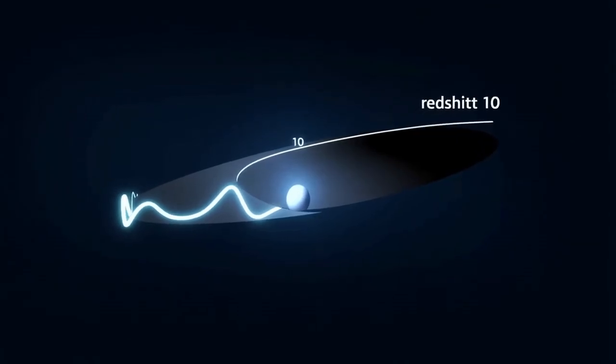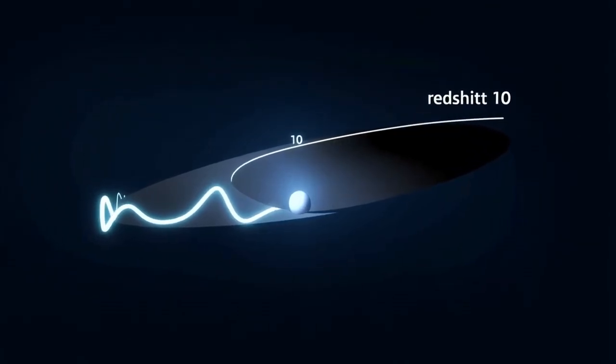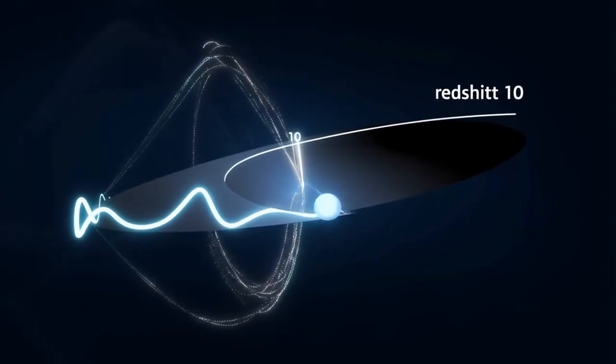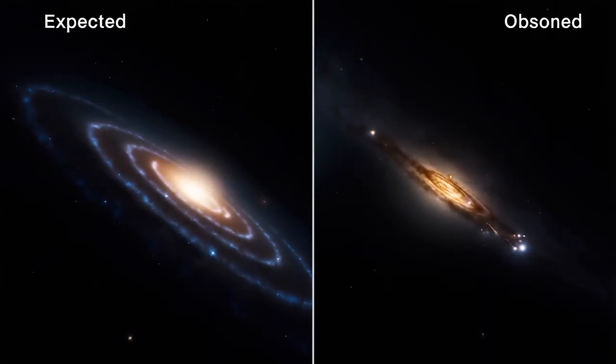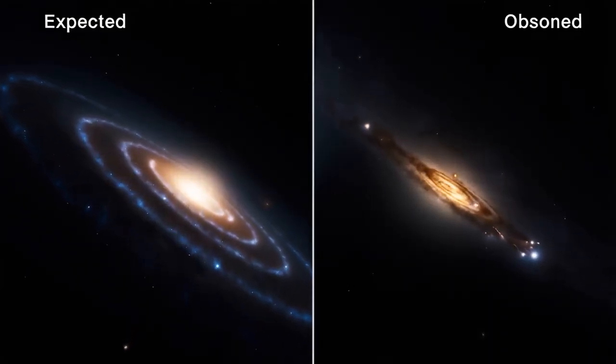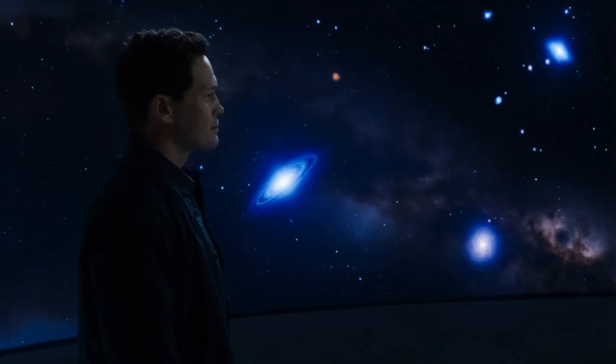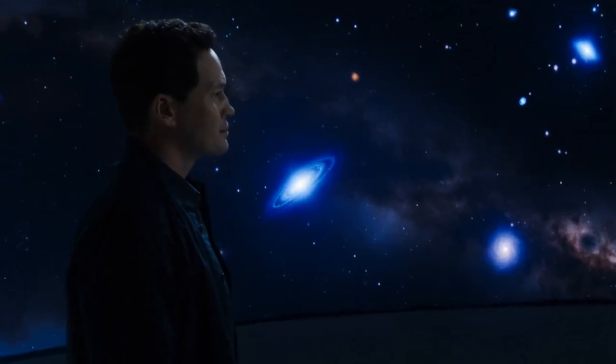Many scientists argue that our models explain the universe's evolution up to a redshift of 10. But beyond that, the universe looks dramatically different from our predictions. No existing theory can fully explain what we observe in the early universe. It's not just about galaxies existing earlier than expected.